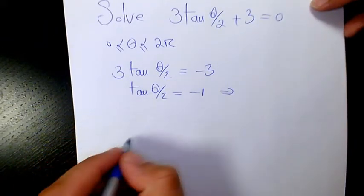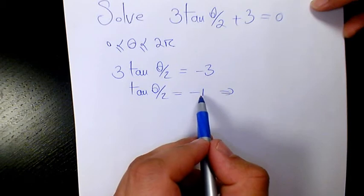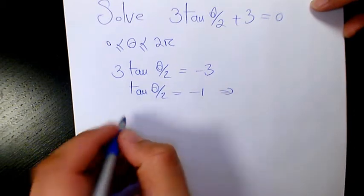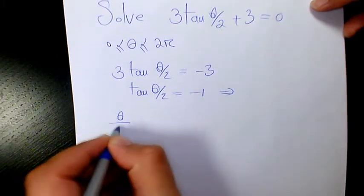tan is negative in quadrant 2 and quadrant 4, and the answer for θ/2 is going to be...